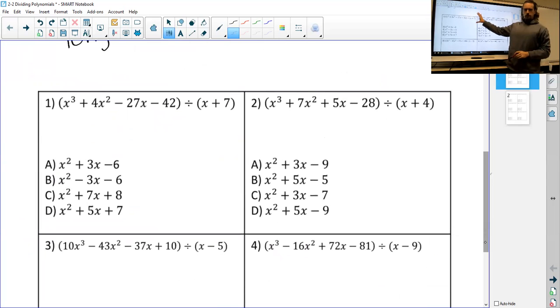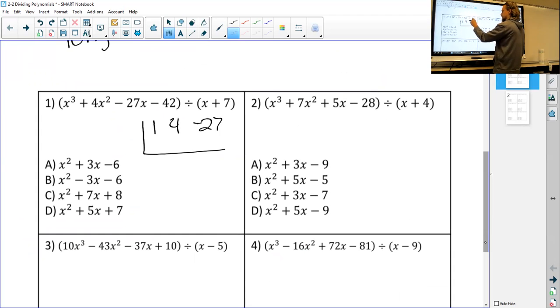Let's look at number one. You're going to pause it and try it yourself. So I'm going to put an upside down division house. I'm going to write down all my coefficients: x to the third has a coefficient of 1, 4x squared so I put 4, minus 27x so I put minus 27, and then minus 42 all by itself. Then I take the opposite of what I'm dividing by and put it on the far left, so instead of plus 7, I'm going to put minus 7.